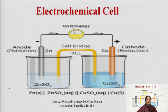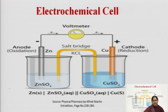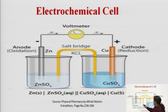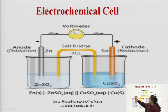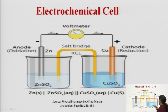In the electrochemical cell we have two beakers. In the first beaker we have a solution of ZnSO₄ and an electrode of zinc; this is designated as the anode because oxidation is taking place here. In the second beaker we have a solution of copper sulfate and a copper electrode; this is termed the cathode because reduction is taking place here.